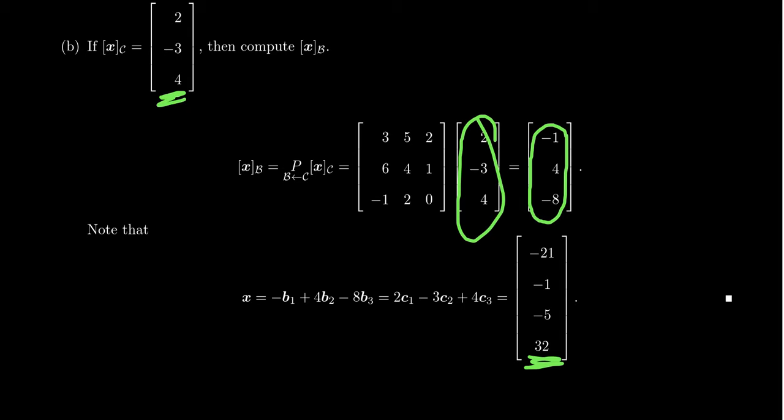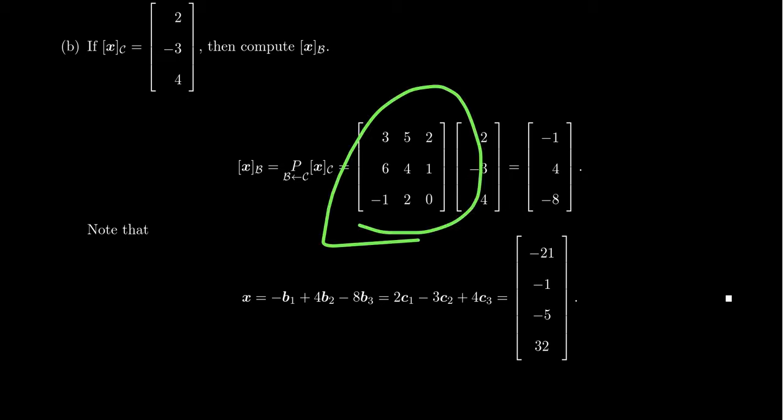This brings us to the end of Chapter 2. The idea of coordinates has very important applications, as I've been alluding to. In the next chapter, Chapter 3, we are going to transition from studying vectors to studying matrices. We've seen a lot of matrices in this chapter, and this video itself was about the change of basis matrix, which we'll see again in the next chapter. Stay tuned for those videos.